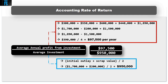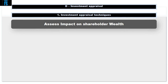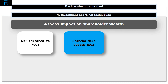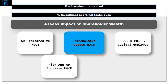The accounting rate of return is therefore $97,500 ÷ $950,000 = 0.10, or 10%. The whole point of appraising this opportunity is ultimately to see if we want to go ahead — whether it will make our shareholders wealthier. ARR is often compared to the company's overall return on capital employed (ROCE), which is a similar measure for the whole business. Shareholders often look at ROCE to understand how well the business is doing. The rationale is: if a project has a potential return higher than the current ROCE, taking it on may increase the ROCE. This is the main reason why ARR is common in practice.